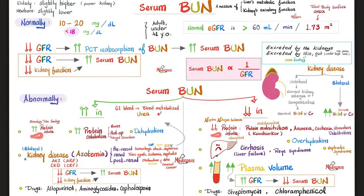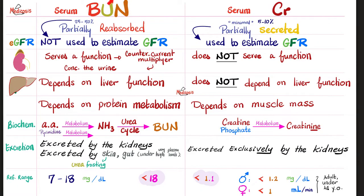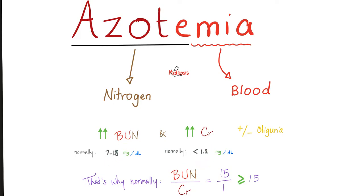The normal BUN is less than 18 mg/dL and normal creatinine is less than 1.2 mg/dL. If average BUN is 15 and average creatinine is 1, the BUN-to-creatinine ratio is 15. Remember: BUN is partially reabsorbed because the kidney needs urea to concentrate the urine, so some urea is reabsorbed from the tubule back to the interstitium. Creatinine is pure waste — it must all be excreted. That's why the normal ratio is 15 or higher.